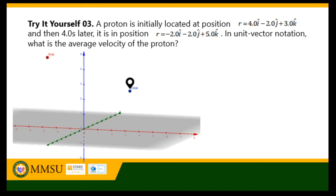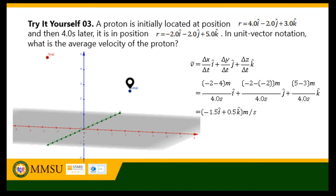Lastly, a proton is initially located at position r equals 4i-hat minus 2j-hat plus 3k-hat, and then 4.0 seconds later it is in position r equals negative 2i-hat minus 2j-hat plus 5k-hat. In unit vector notation, what is the average velocity of the proton? Its velocity can be computed by components.